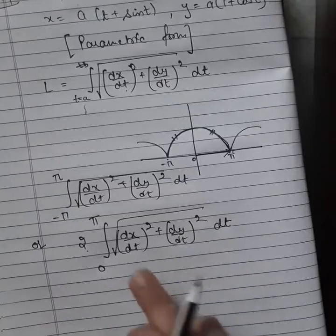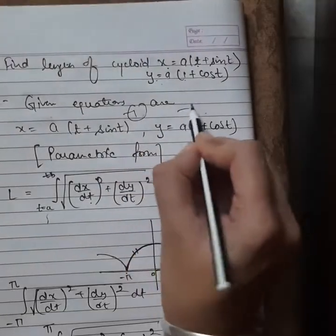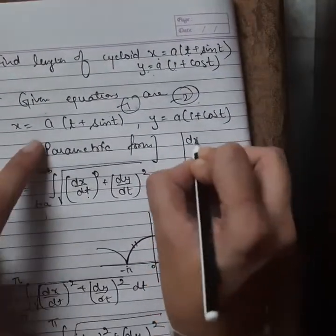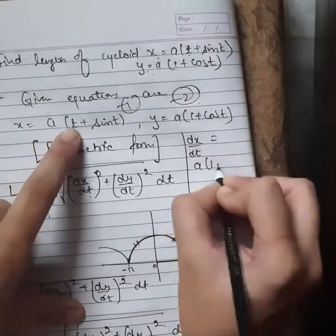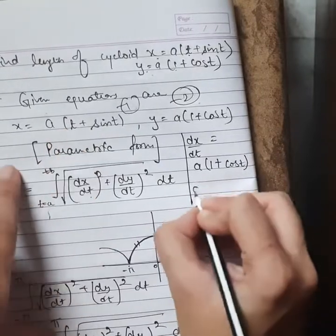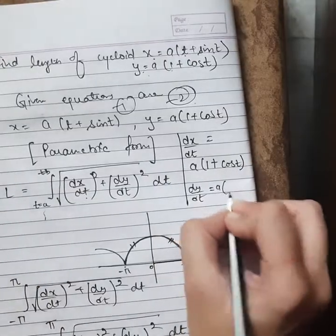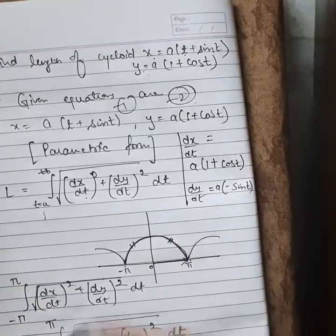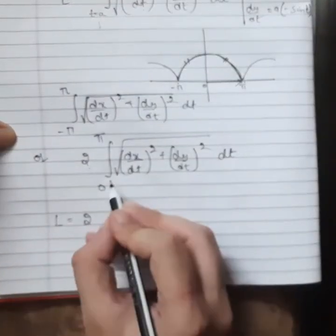Now let's calculate dx/dt and dy/dt. From equation 1: dx/dt equals a(1 + cos t), since the derivative of t is 1 and the derivative of sin t is cos t. From equation 2: dy/dt equals a(-sin t), since the derivative of 1 is 0 and the derivative of cos t is -sin t. We will use the second form of the integral.